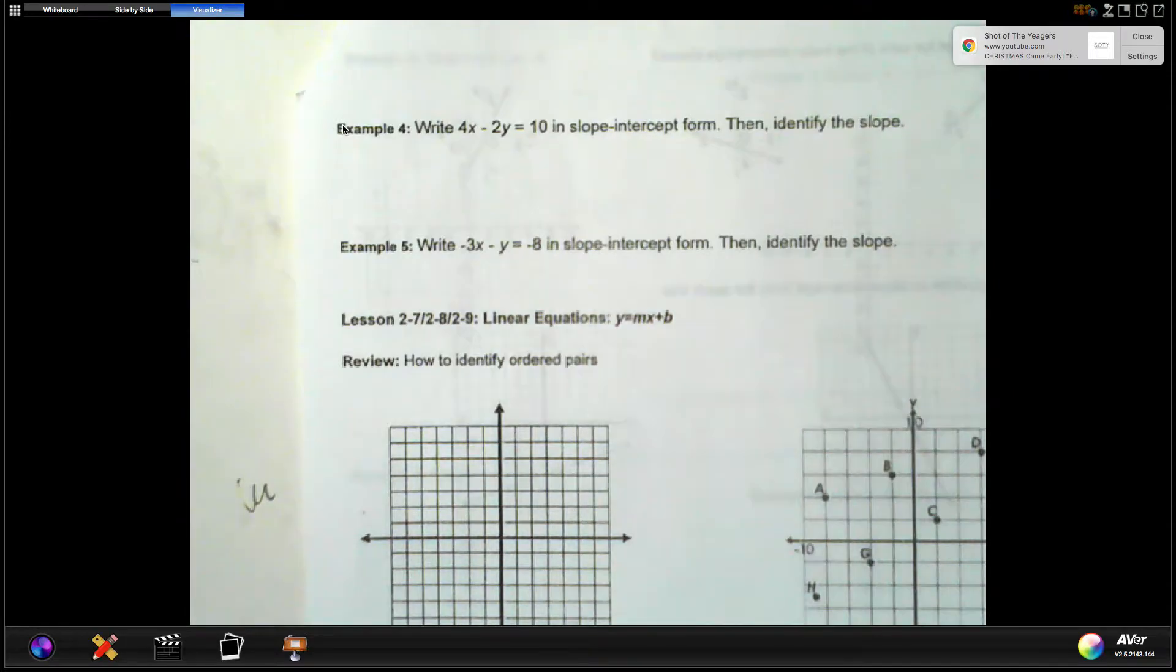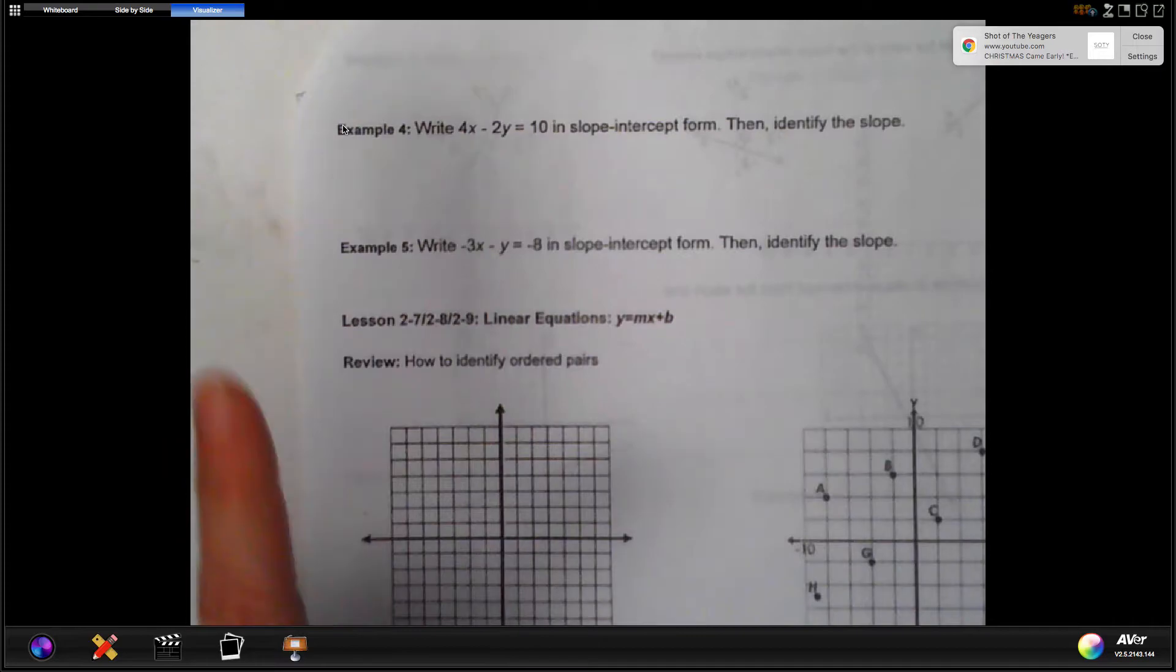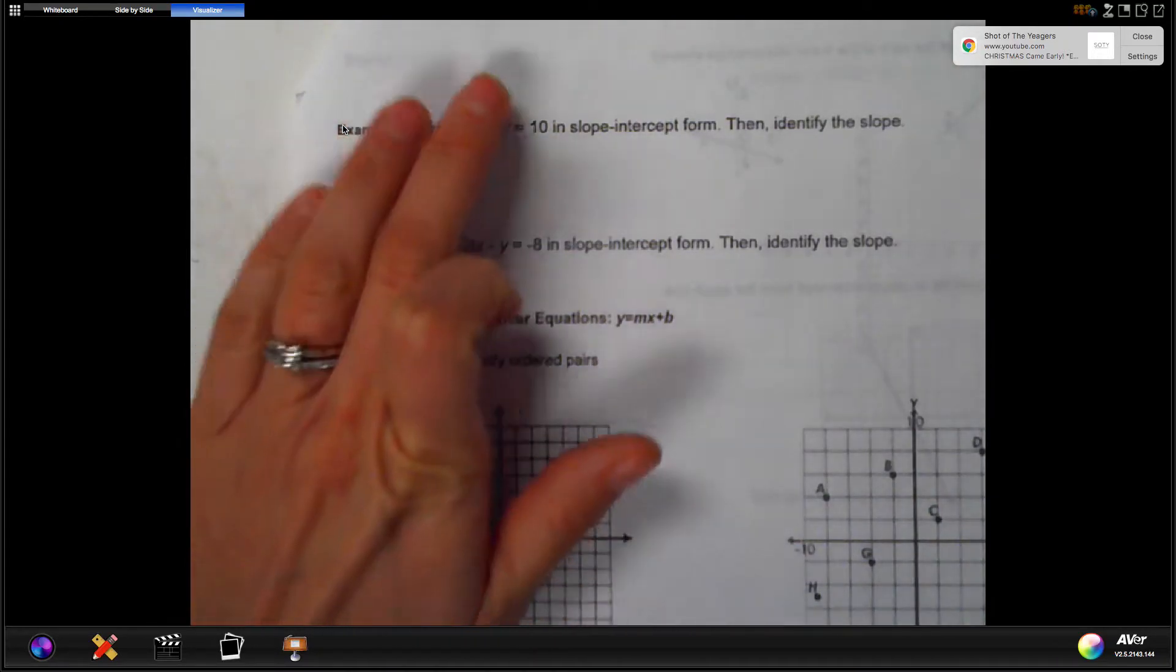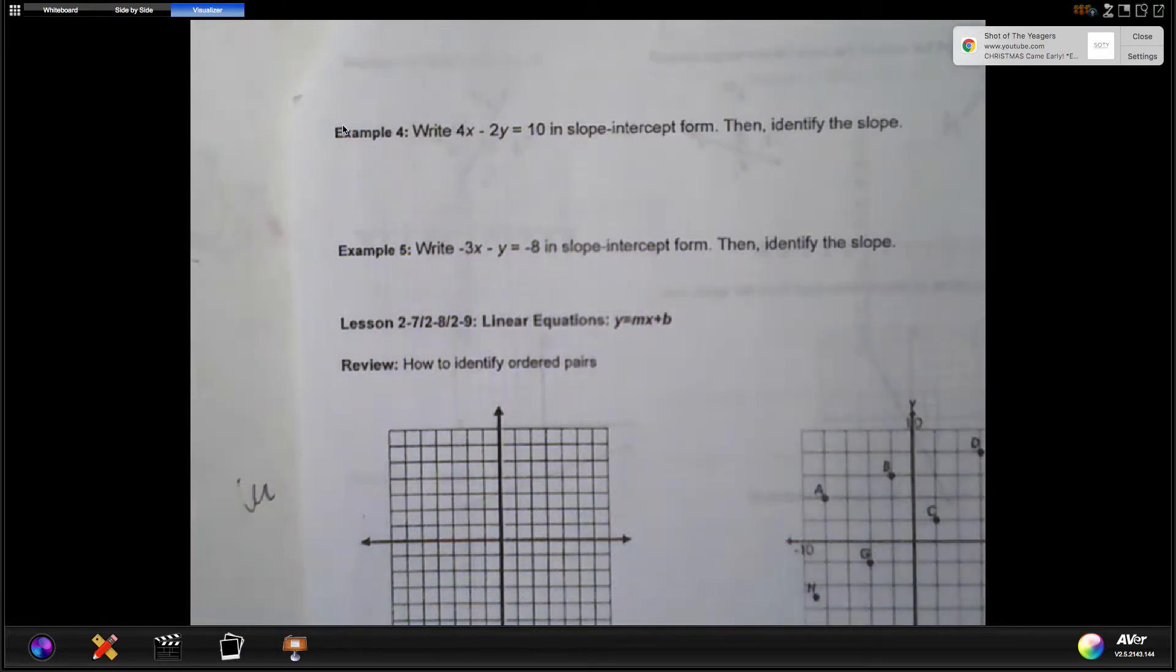Example 3 is where it does get a little bit more challenging, and that is an example like this. If you have 2x plus y equal 8, it is not in slope-intercept form, because y has this 2x on the same side of the equal sign as it, and we have to get it in slope-intercept form first, then we can identify the slope.